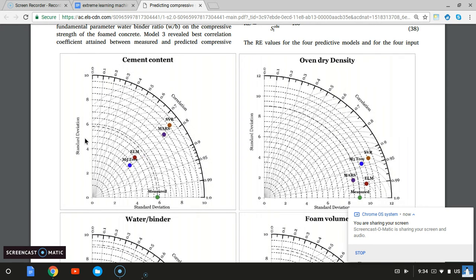In the Taylor diagram, you have the standard deviation measured on this axis, and then the radial lines connecting them. You plot your points depending on where the standard deviation is.